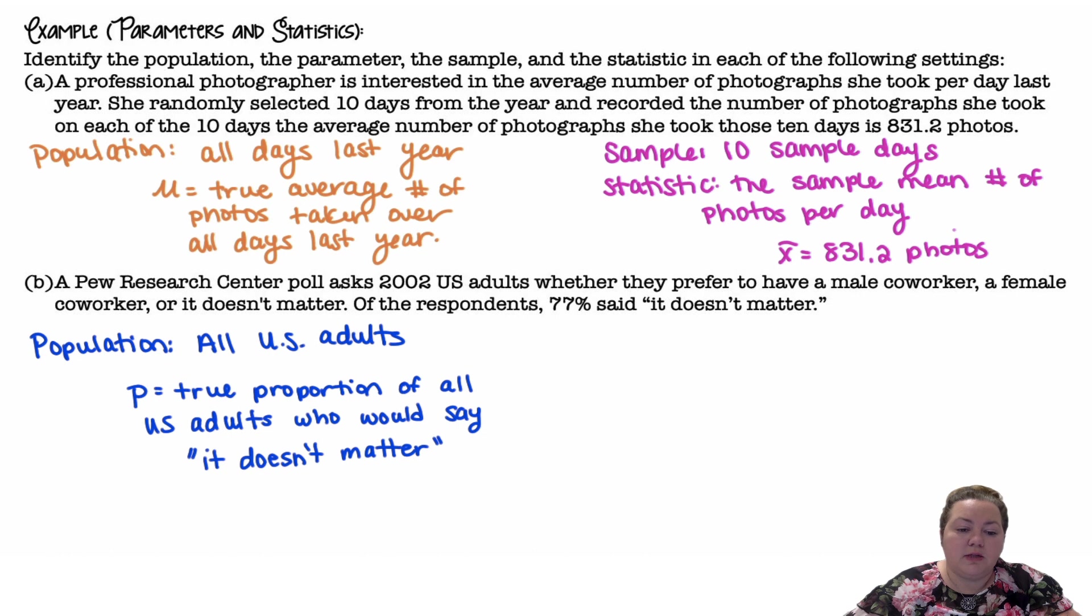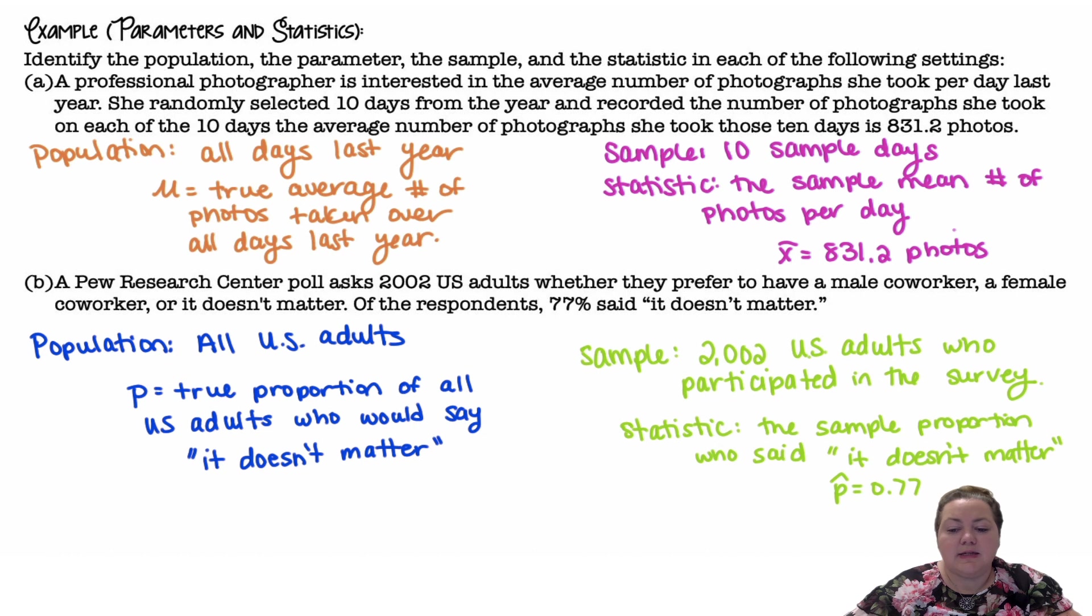So our population would be all U.S. adults. And my parameter that I'm trying to estimate is the true proportion of all U.S. adults who would say it doesn't matter. Our sample would be the 2,002 U.S. adults who participated in the survey. And the statistic is the sample proportion who said it doesn't matter, which would be p̂, which is 77%, or 0.77.